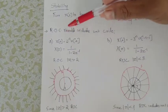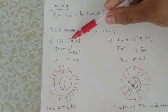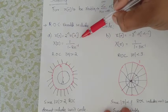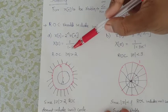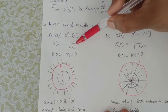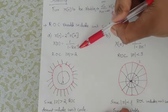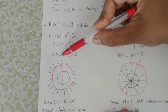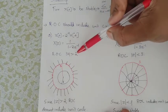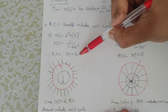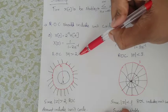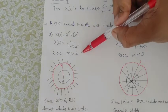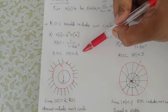Let's look at the next example. The first example is 2^n u(n). The Z-transform X(z) is equal to 1 divided by (1 minus 2 z^{-1}). The ROC is |z| greater than 2. That is unstable since ROC should be greater than 2, which does not include the unit circle.